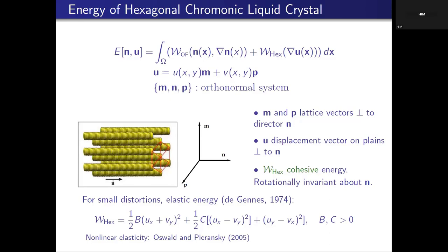Now let's talk about the energy of these hexagonal chromonic liquid crystals. We have two fields: the director field N and a displacement vector field U. Using the Frank energy, there is also a hexagonal energy — the liquid crystal energy in the long direction, and the solid energy of the cross-section with lattice vectors M and P in the perpendicular direction. This is also called cohesive energy because it holds the structure together. The first proposal of this form goes back to de Gennes in 1974, with B the bulk modulus and C the shear modulus.